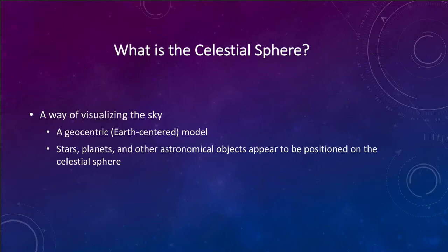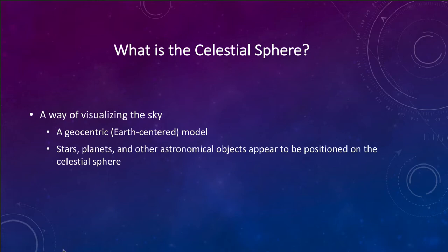So what is the celestial sphere? The celestial sphere is a way of visualizing the sky — a way to see what is there in the sky. It is a geocentric model, meaning we are looking at it from an Earth-centered point of view. We consider it Earth-centered. Now we know that's not correct, but it still works for determining positions in the sky because it acts as though we are at the center of this great sphere.